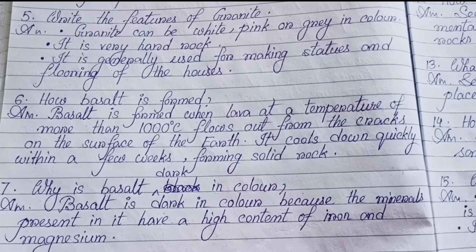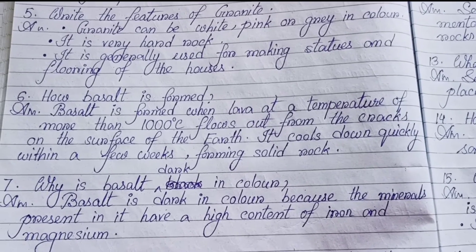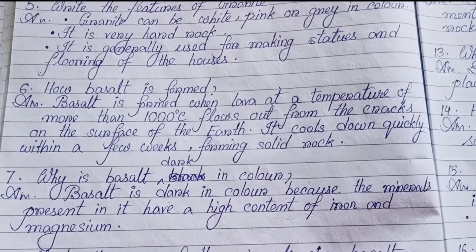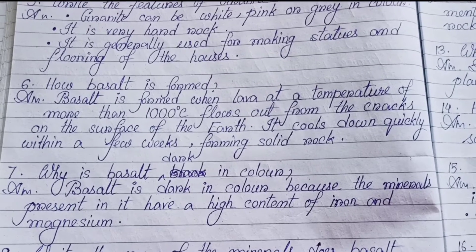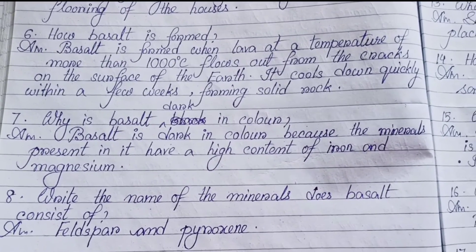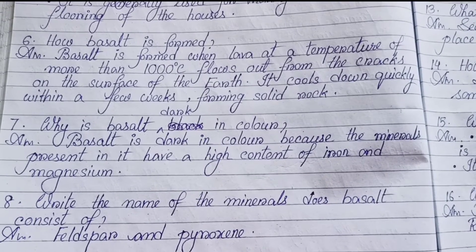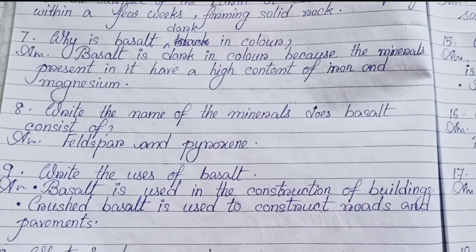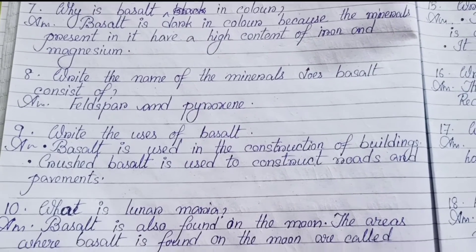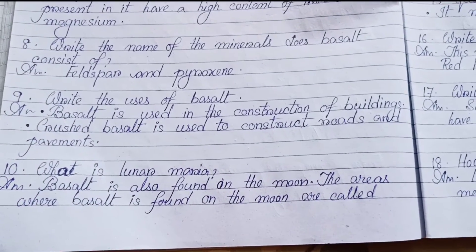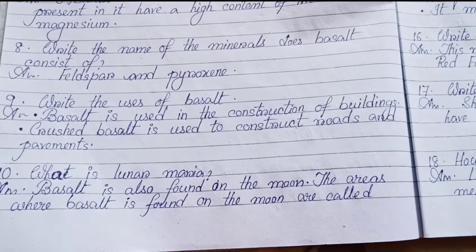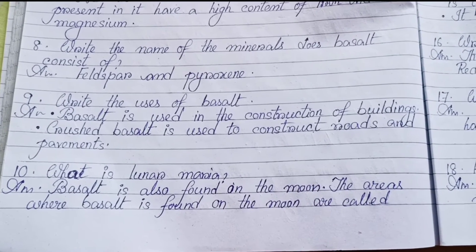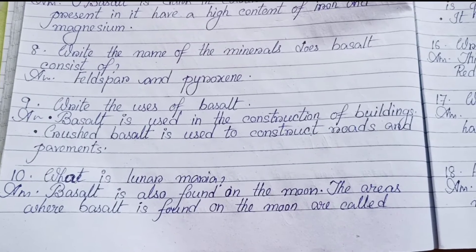Number six: How is basalt formed? Basalt is formed when lava at a temperature of more than 1000 degrees centigrade flows out from cracks on the surface of the earth. It cools down quickly within a few weeks forming solid rocks. Number seven: Why is basalt dark in color? Basalt is dark in color because the minerals present in it have a high content of iron and magnesium. Number eight: What minerals does basalt consist of? Feldspar and Pyroxene.